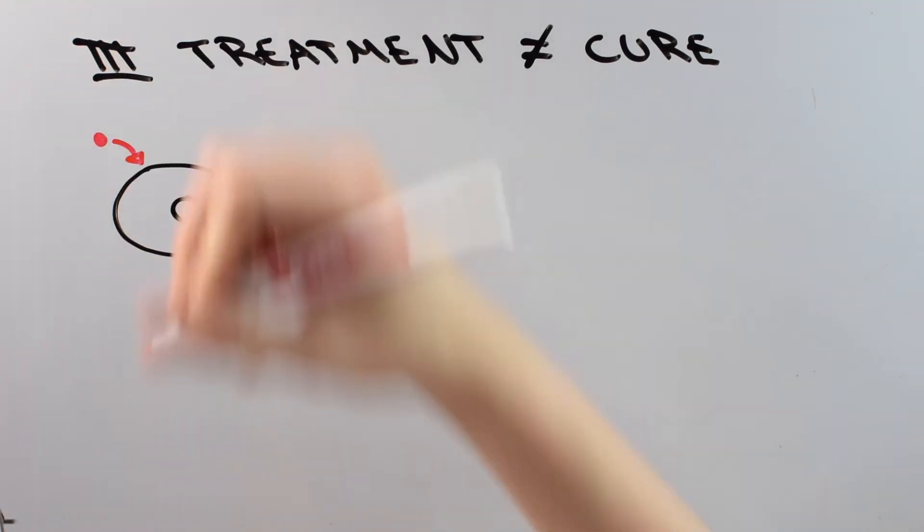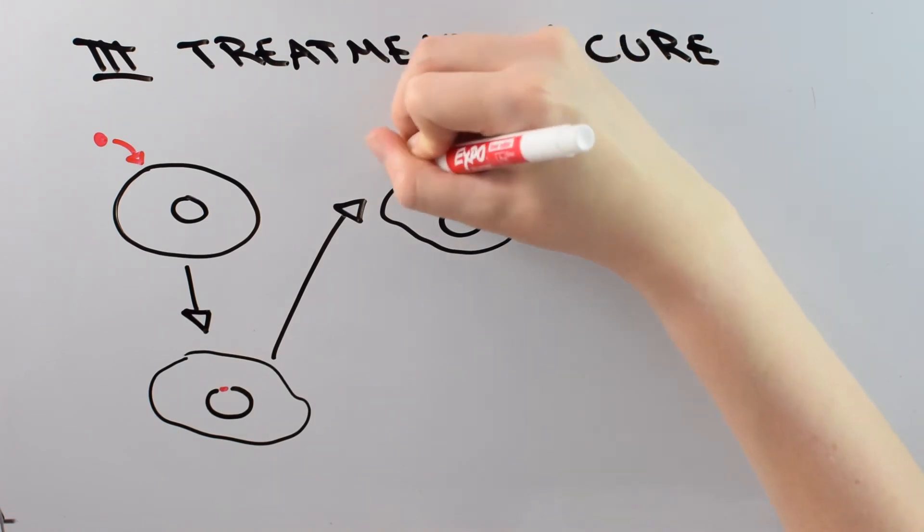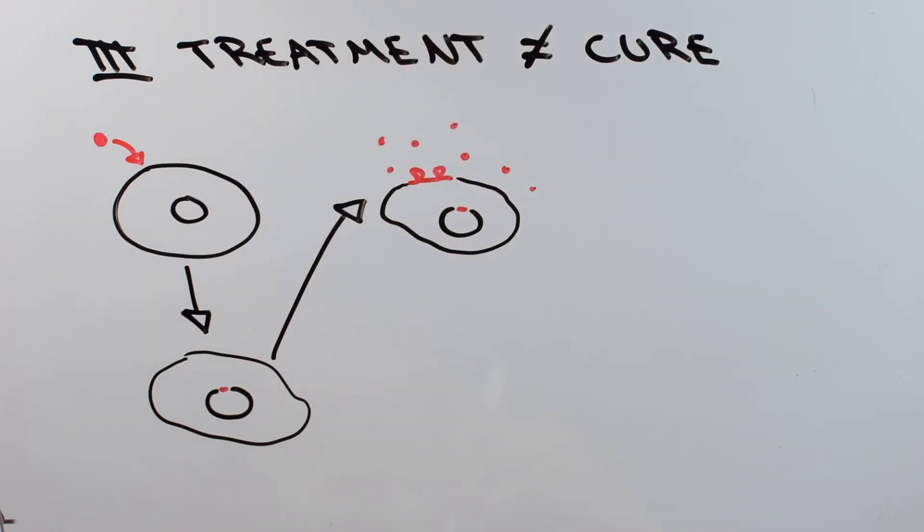When HIV infects a cell and inserts its genetic information into the DNA of that cell, it then has two choices. The first choice is to start making more virus right away. And this is what happens most of the time. The second choice is a little more sneaky. And surprisingly, that choice is to do nothing.